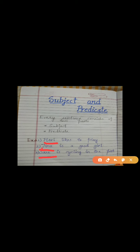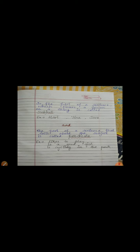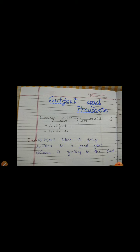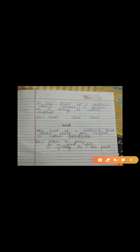From here we have got our definition. The part of the sentence which names a person or a thing is called the subject. So here the subjects are Hari, Tina, and Sara. And the remaining parts — likes to play, is a good girl, is cycling in the park — these three are our predicate. The part of a sentence that tells about the subject is called the predicate.